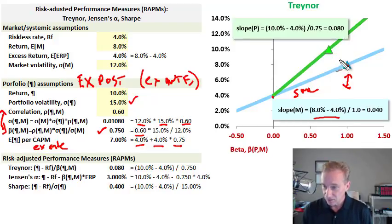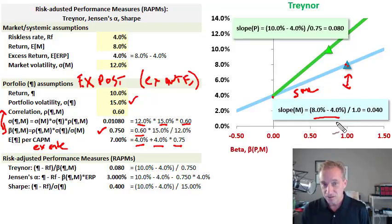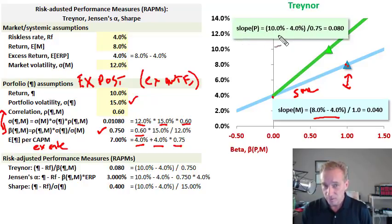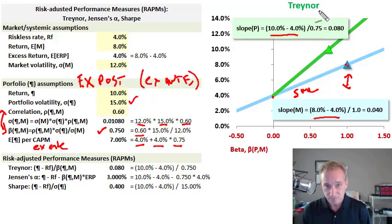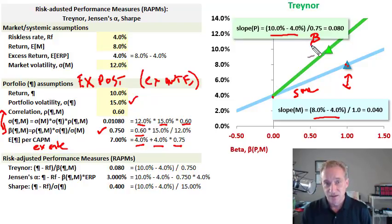The Traynor measure gives us some visual context because as an abstract number—0.08—it's not obvious what that means. The benchmark is the slope of the security market line, which is the equity risk premium of 4%. Here our portfolio's Traynor is double that. The Traynor is a risk-adjusted return measure: the numerator is the portfolio's excess return (10% minus 4% = 6%), divided by beta of 0.75. That's why it's really only well-suited for portfolios that are already well-diversified, because it's not counting total risk.